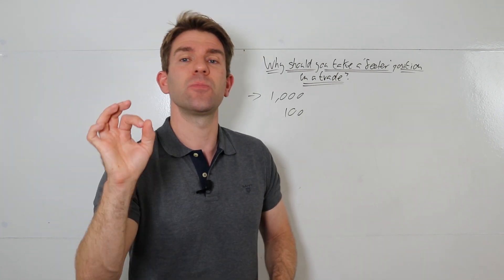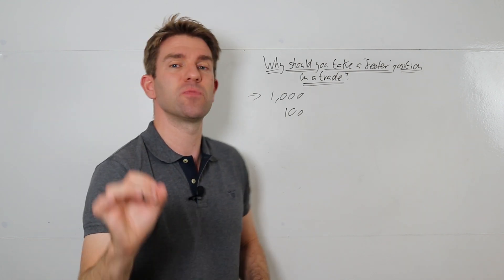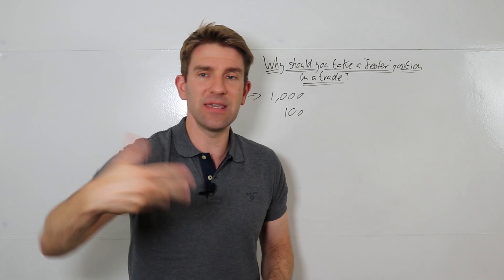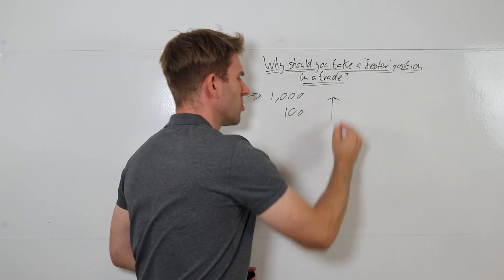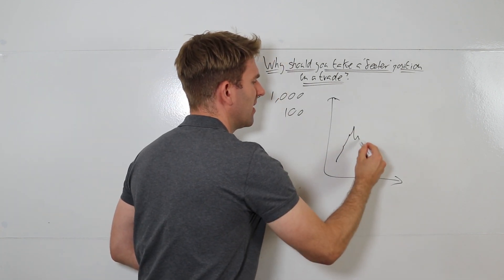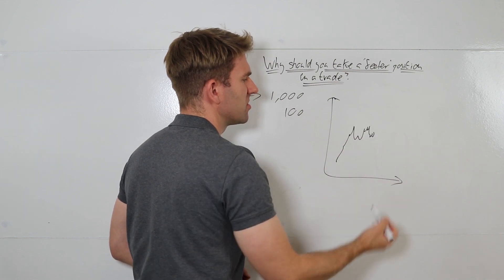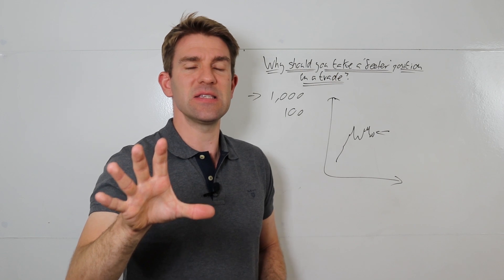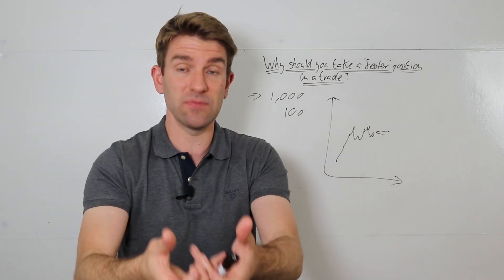It's to say, you know what, let's just put a small feeler position on. Let's just put a tenth of my normal position on. And what that does is, let's say they're thinking long. You've got a market doing this, they're thinking, right, I think this is a long. I think I'm going to rip to the highs. Put a little feeler position on. Now the point is that this then gives them some skin in the game.